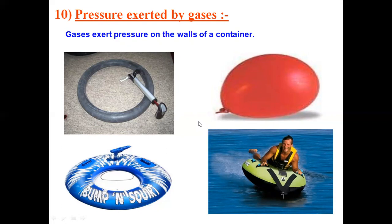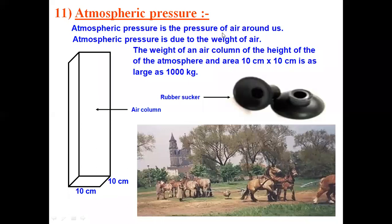Next comes atmospheric pressure. Atmospheric pressure is the pressure of the air around us. It is due to the weight of air. The weight of an air column of atmospheric height over an area of 10 cm × 10 cm is as large as 1000 kg, so air is also exerting a significant pressure.